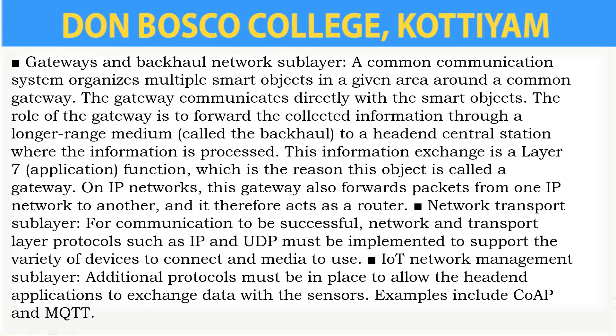At the central station, information is processed. This information exchange layer is layer 7, that is the application layer. This is the reason we call it a gateway. On IP networks, this gateway also forwards packets from one IP network to another IP network and acts as a router.